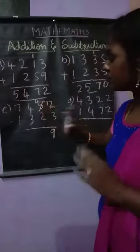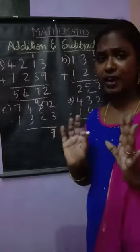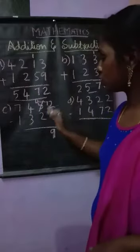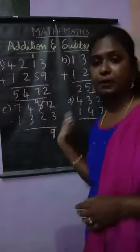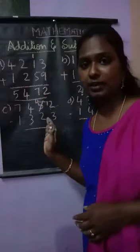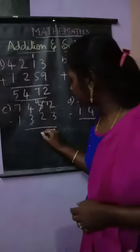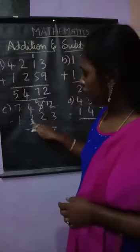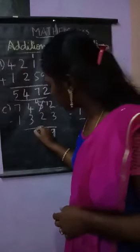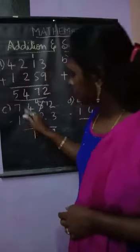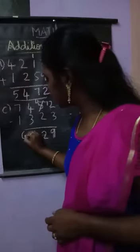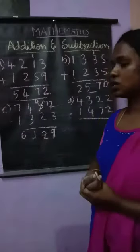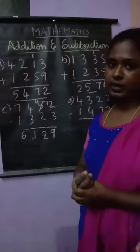We will not have 5 anymore in that column — we have just 4, because we gave one as a borrow. So 4 minus 2 is 2. Then 4 minus 3 is 1. And 7 minus 1 is 6. So I got 6129.